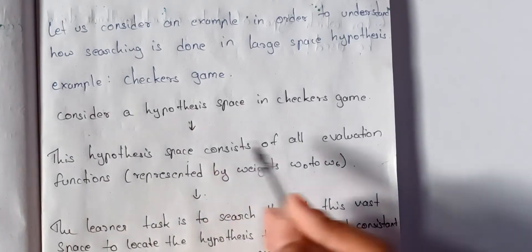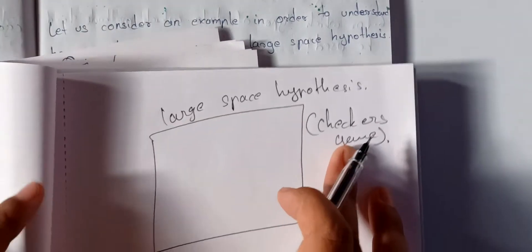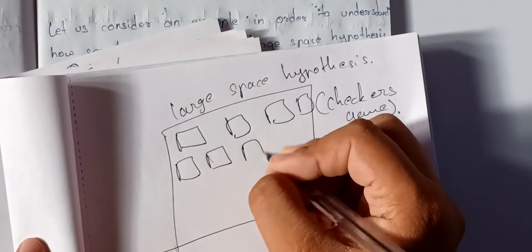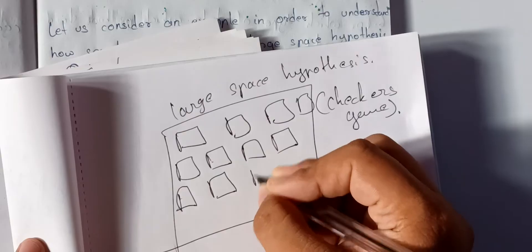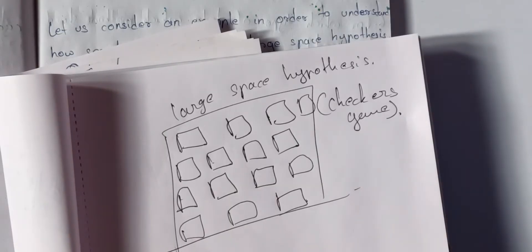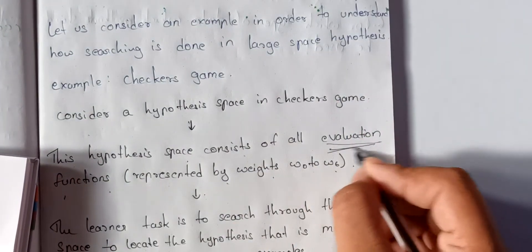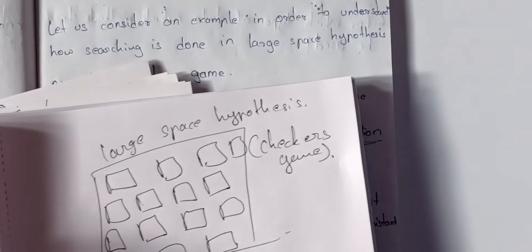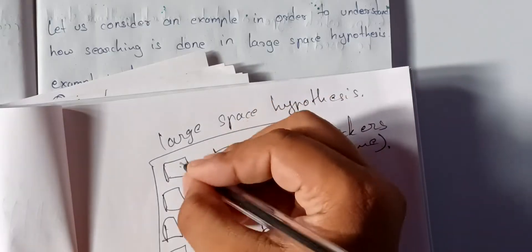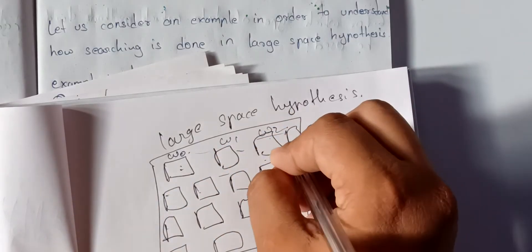This hypothesis space consists of all evaluation functions represented by weights W0 to W6. In the checkers game, every type of board state with all possible features — like one red piece, one position — can be chosen. Each board state is evaluated by allotting weights to it, and one of the weights W1, W2, or others will correspond to the winning state.